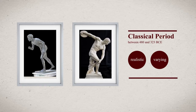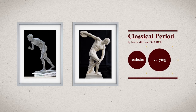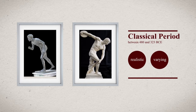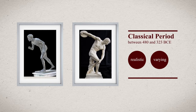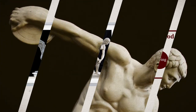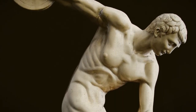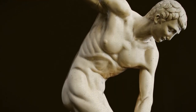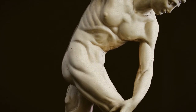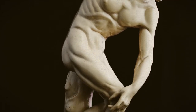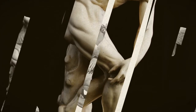However, Greek sculptures became extremely realistic and varying during the period called the Classical Period, between 480 and 323 BCE. Probably the biggest change was the highly accurate depictions of the human body.